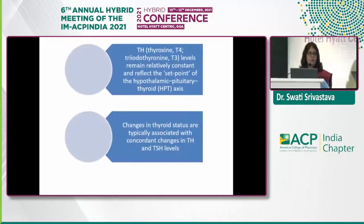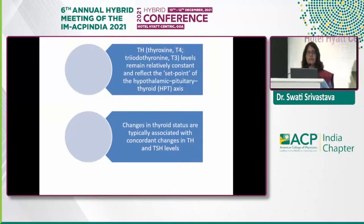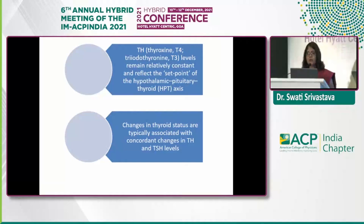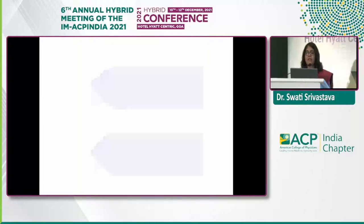When we talk about thyroid function tests, thyroid hormones — thyroxine (T4) and triiodothyronine (T3) — remain relatively constant and reflect the set point of the hypothalamic-pituitary-thyroid axis. Even a small change can render a patient mildly hypo- or hyperthyroid, but they remain relatively stable. Along with changes in thyroid hormone, there are concordant changes in TSH levels.